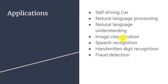Deep learning is currently setting the trend and has many useful applications: self-driving cars, natural language processing, natural language understanding (as seen in Alexa or Google Home), image classification, speech recognition, and handwritten digit recognition — which is called the 'Hello World' problem of deep learning and which we will be covering. Fraud detection is another application. From the next video onwards, we will first learn the mathematical background needed for deep learning, then implement neural networks and related topics.